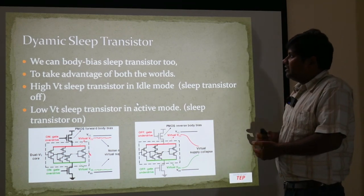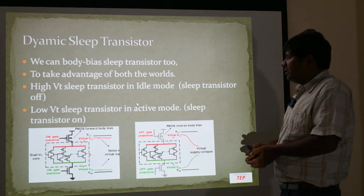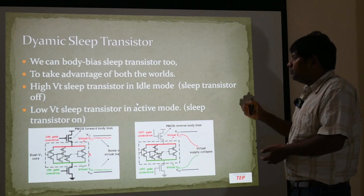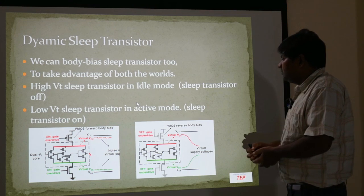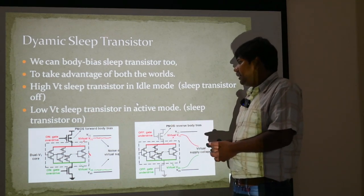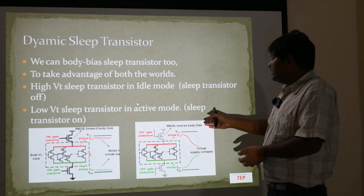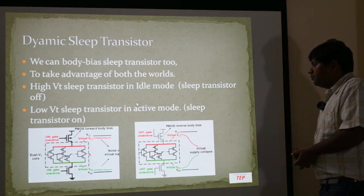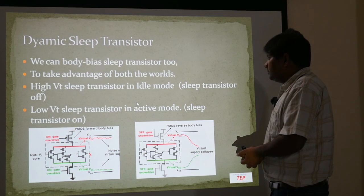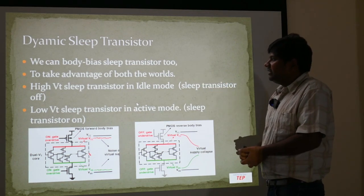Another concept is the dynamic sleep transistor. Using body bias, we can dynamically change the VT of a transistor at runtime. We use a high VT sleep transistor in idle mode, while in active mode the same transistor is configured as a low VT transistor. So the gating transistors — which were already high VT — have their VT increased further in idle mode, and in active mode, since current flows through them, body bias is used to configure them as low VT transistors.